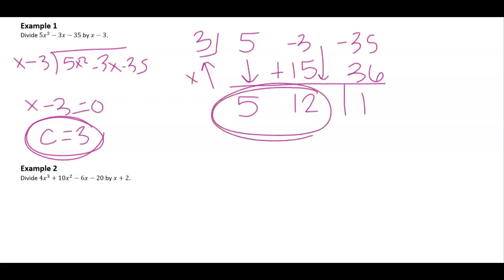This term right here is then going to be 1 degree less than my original function. So 5x plus 12 is my quotient, and my remainder is 1.